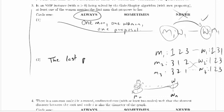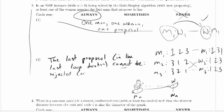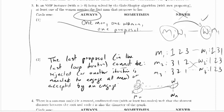The last proposal in the last loop iteration cannot be rejected, or another iteration is needed, or another iteration is needed to engage all men, or accepted by an engaged woman, or her former fiancé needs further iterations.